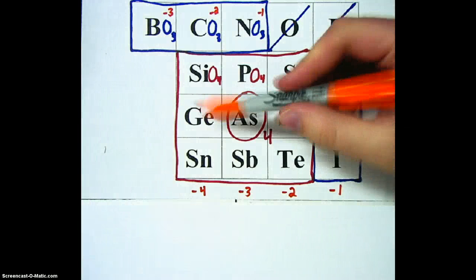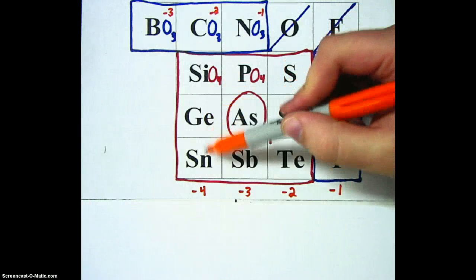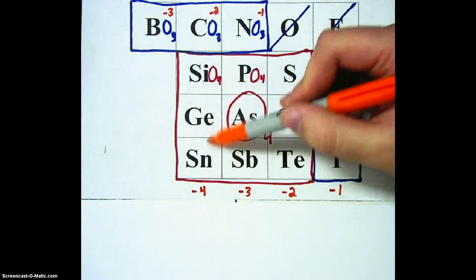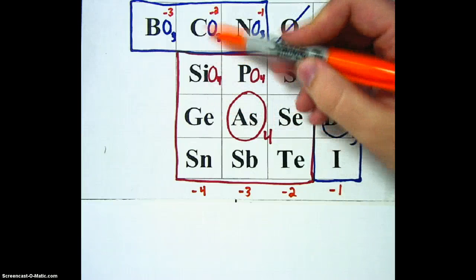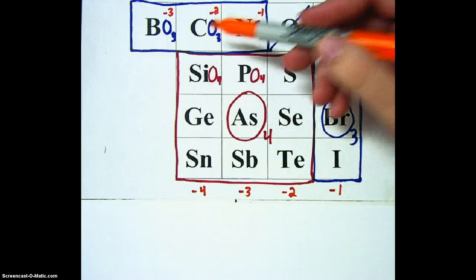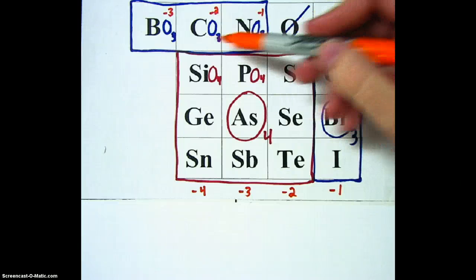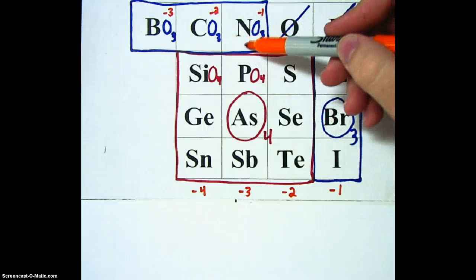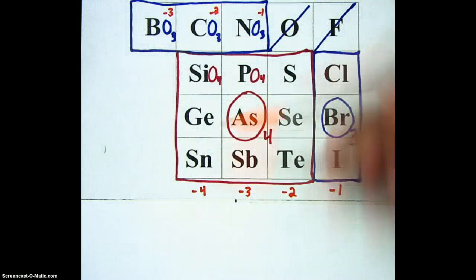In the group with silicon, germanium, and tin, their polyatomic ions will have a minus four charge. But carbon is special — it will have a minus two charge. Same thing for nitrogen and the elements in that group, which follow their own special charges rather than the standard group pattern.